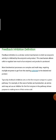Typically, feedback inhibition acts on the first enzyme needed in a given pathway. For example, in the case of amino acid production, an amino acid may act as an inhibitor for the first enzyme in the path whose purpose is making more of that amino acid.